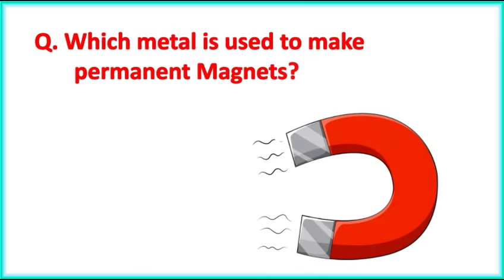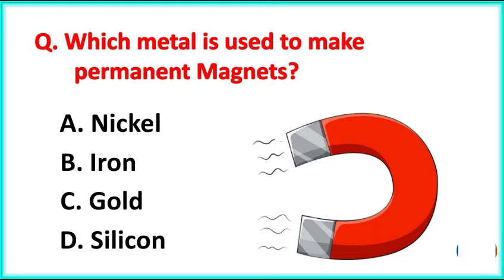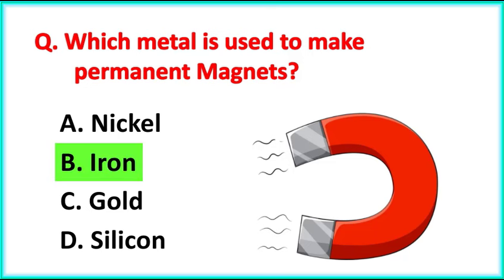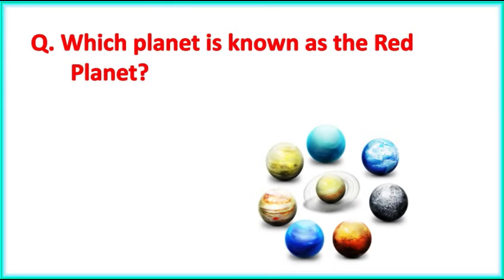Which metal is used to make permanent magnets? The correct answer is Option B. Iron.